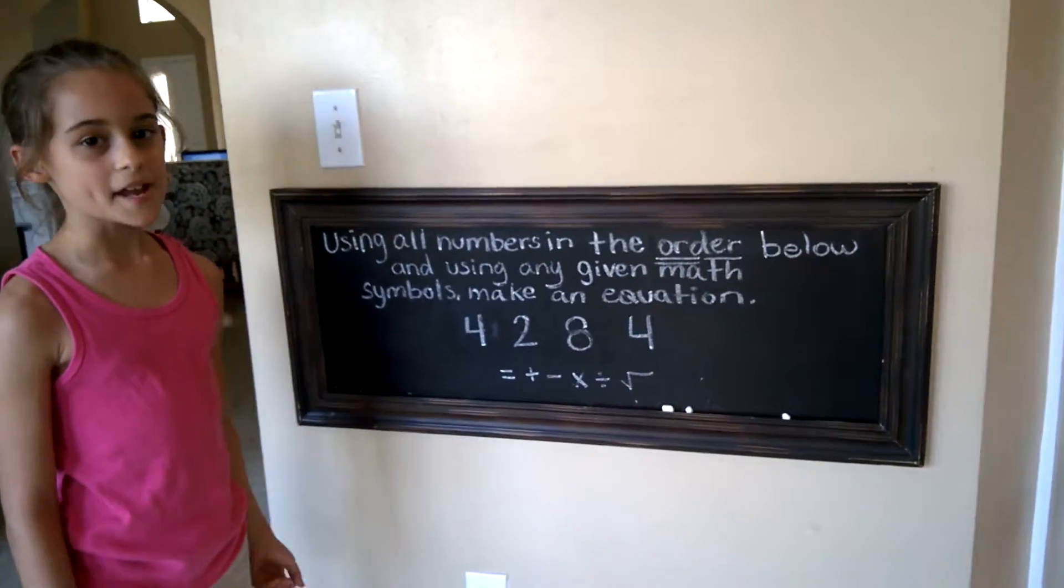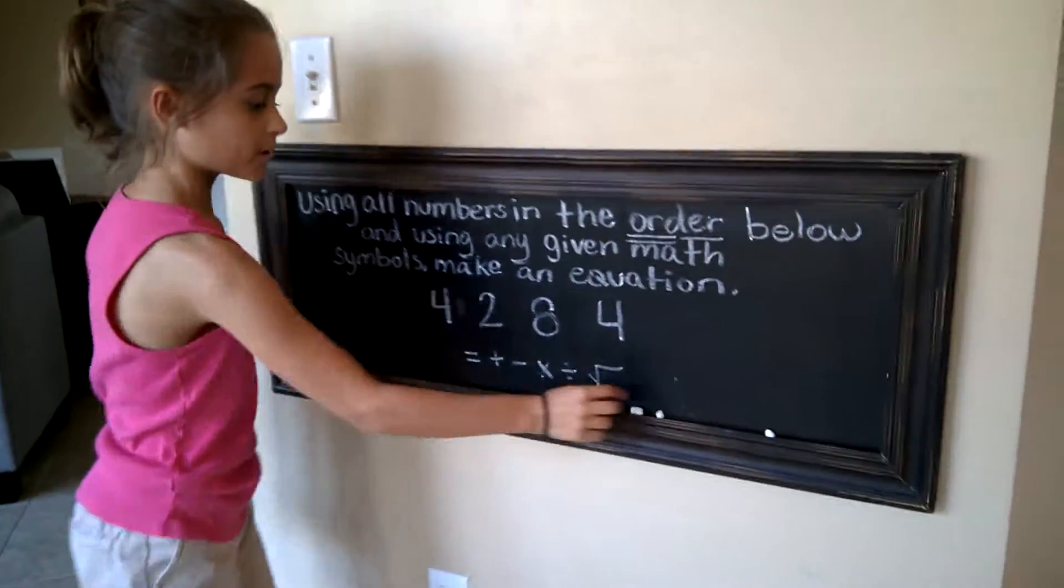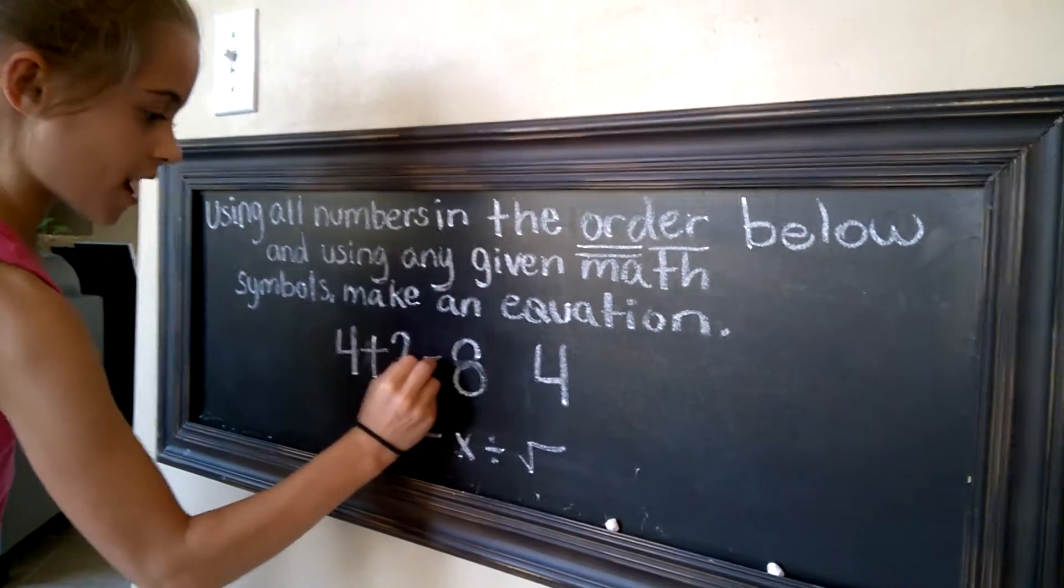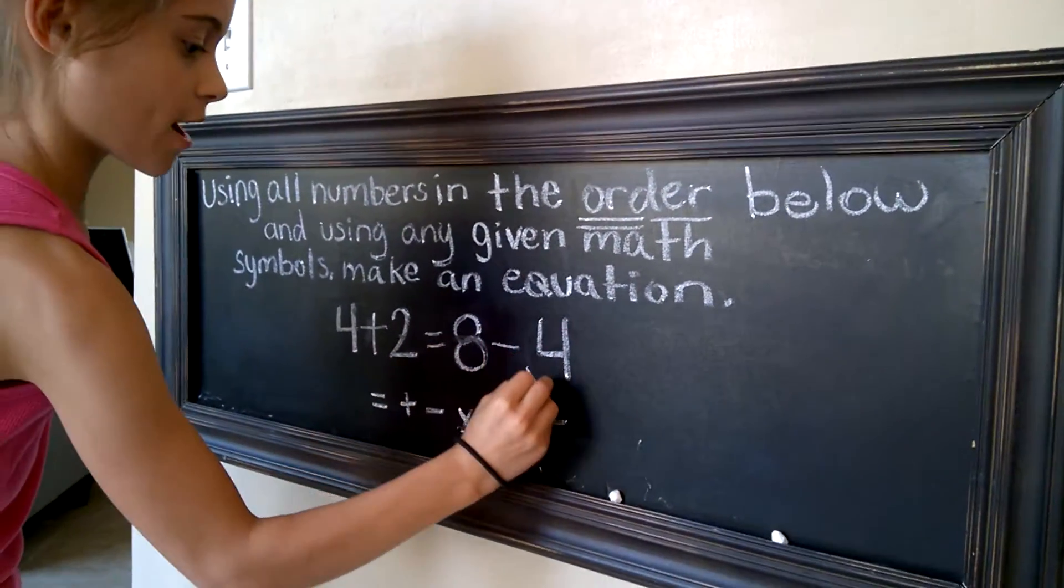Now a third way to make an equation using these numbers is 4 plus 2 equals 8 minus the square root of 4.